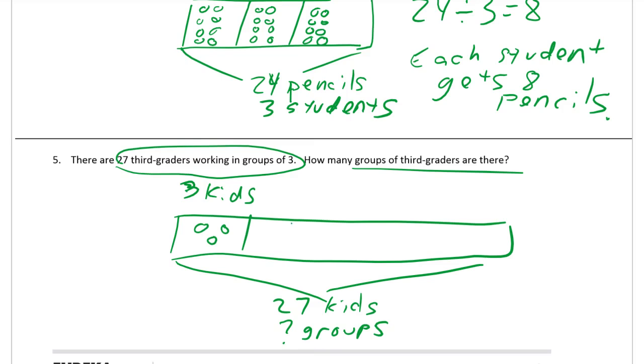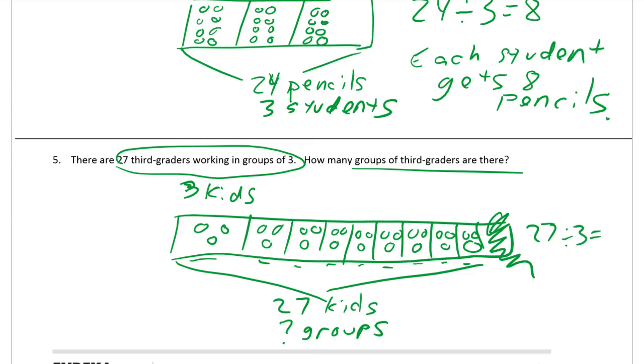So, 3, 6, 9, 12, 15, 18, 21, 24, 27. That's it. How many groups? 1, 2, 3, 4, 5, 6, 7, 8, 9 groups. So we have 27 divided by 3 equals 9. There are 9 groups of kids.